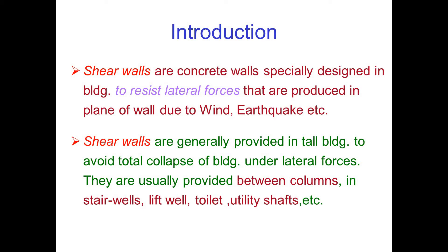Shear walls are generally provided in tall buildings to avoid total collapse under lateral forces. They are usually provided between columns, stair walls, lift wells, and toilet and utility shafts. For example, the lift block in a general building is basically built using a reinforced cement concrete wall, which is equally treated as a shear wall.